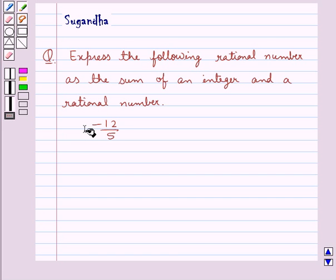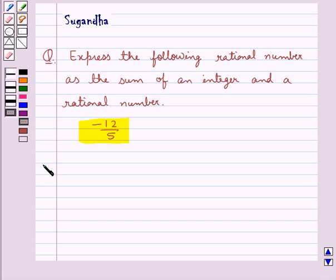The given rational number is minus 12 upon 5. Let's move on to the solution now.